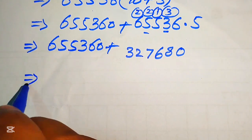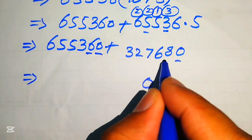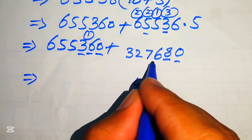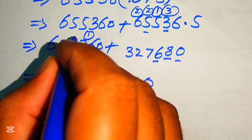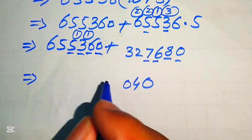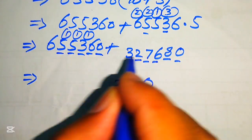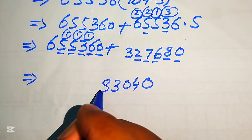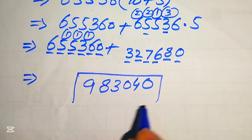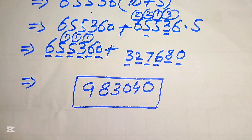In the final step we add 655,360 and 327,680. Working through the addition: 0 plus 0 is 0; 6 plus 8 is 14, write 4 carry 1; 3 plus 6 is 9, plus 1 is 10, write 0 carry 1; 5 plus 7 is 12, plus 1 is 13, write 3 carry 1; 5 plus 2 is 7, plus 1 is 8; and 6 plus 3 is 9. So the final answer is 983,040. Thank you for watching — please subscribe to my channel for more exciting videos.